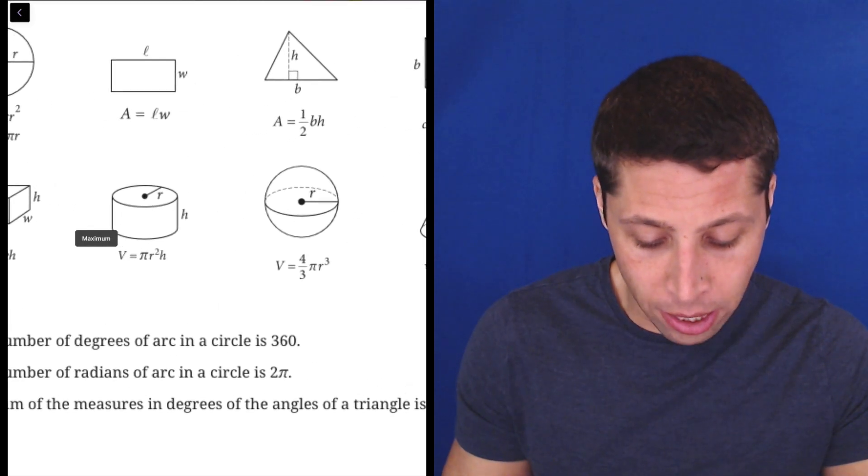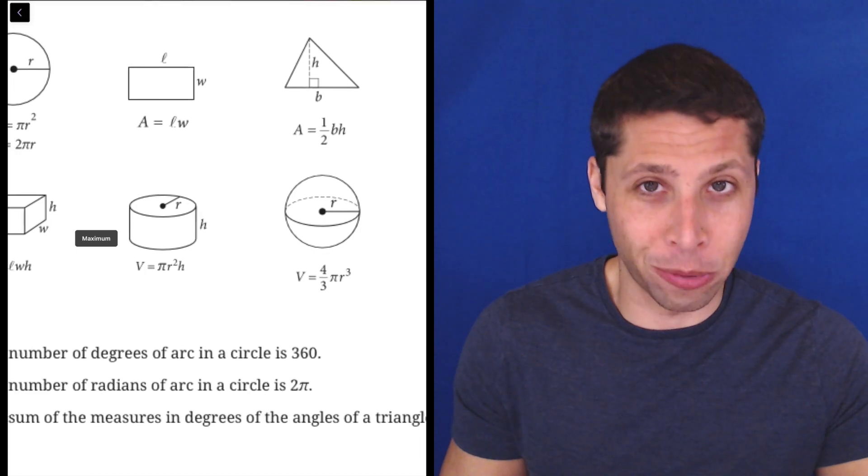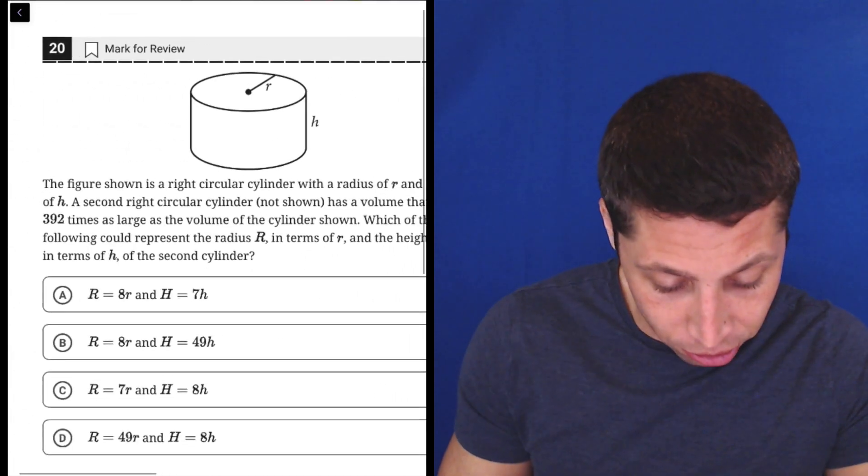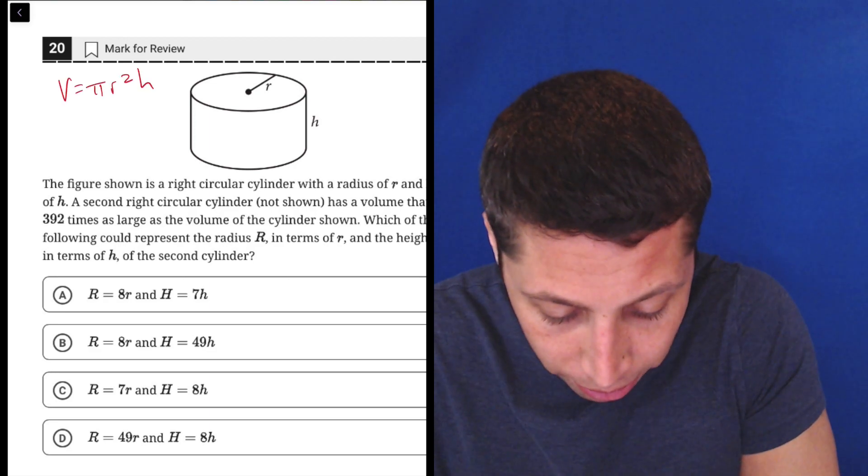This is all you need. They give us the volume of a cylinder. It's literally the same picture. Volume is equal to pi r squared h. R is the radius, H is the height. So let's just transfer that right over. V equals pi r squared h.